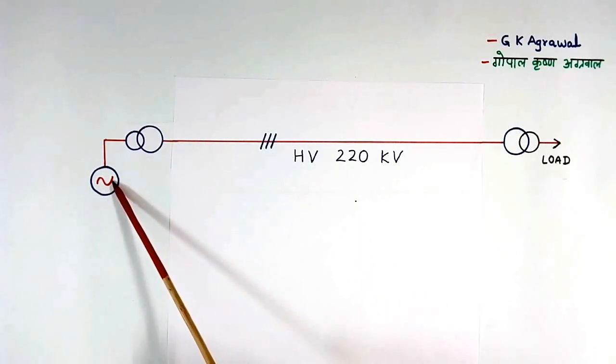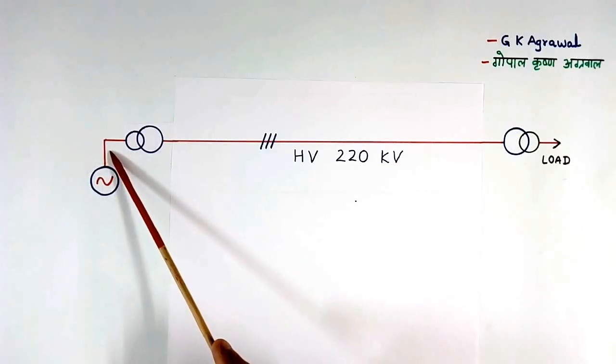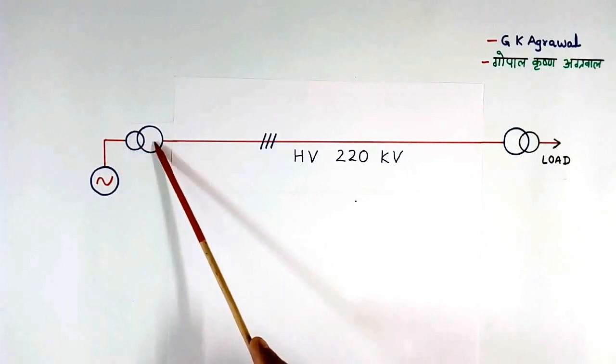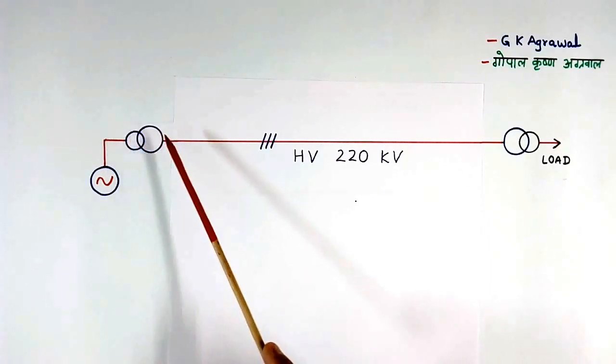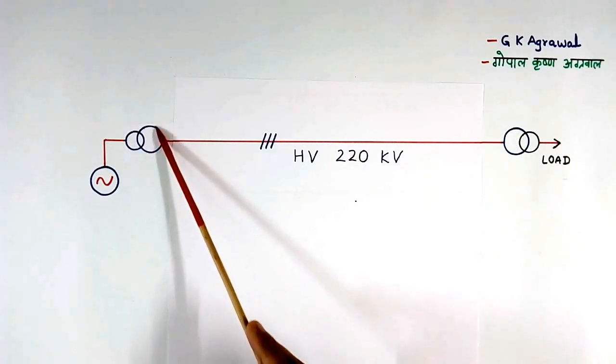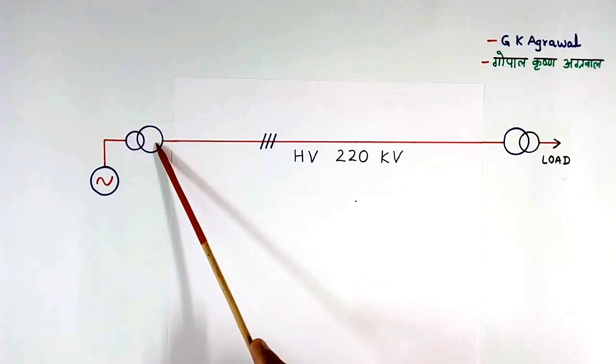This is generator at the generating station. Power is generated at low voltage. This is step-up transformer. So voltage is increased from low voltage to high voltage using this step-up transformer.